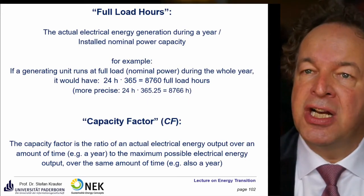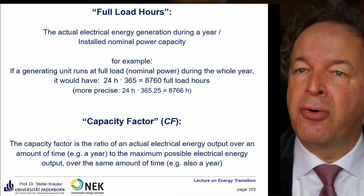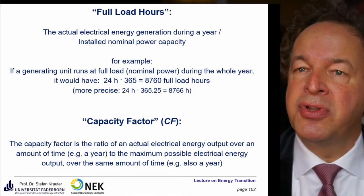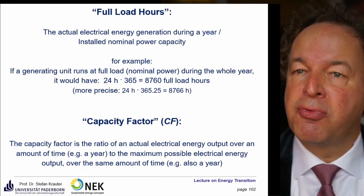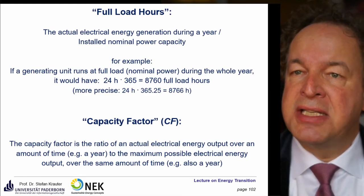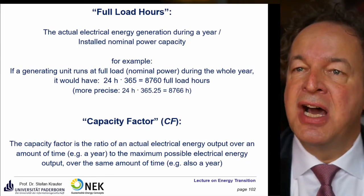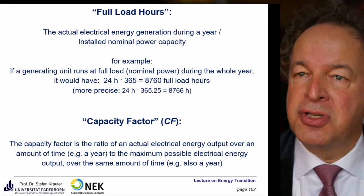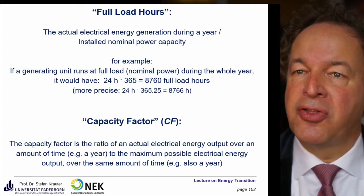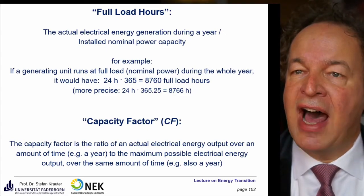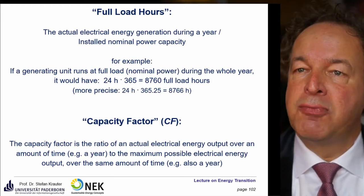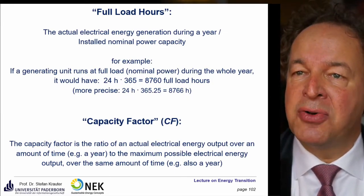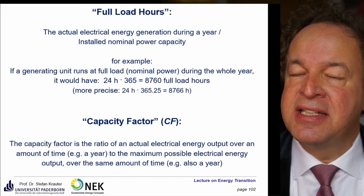For example, if a generating unit runs at full load nominal power during the whole year, it would have 24 hours times 365 days, equivalent to 8,760 full load hours. You can do it more precisely because a year has exactly 365.25 days, which is equivalent to 8,766 hours.